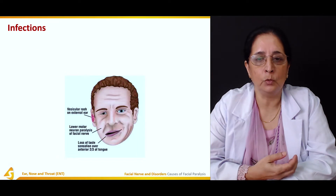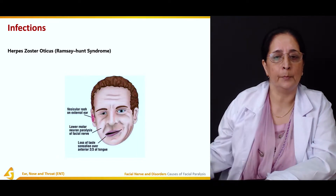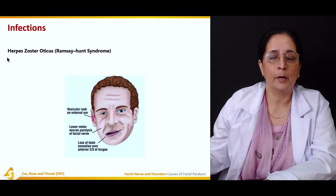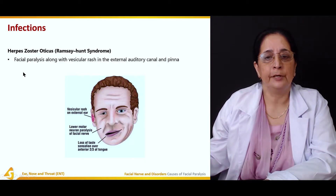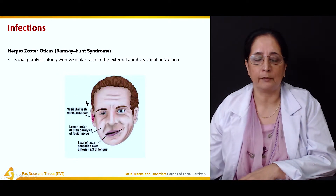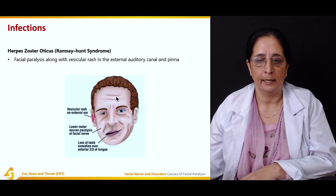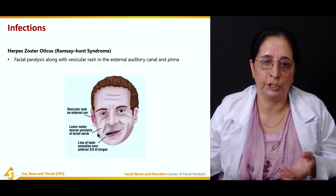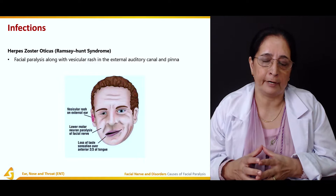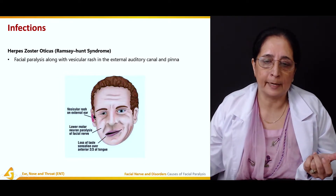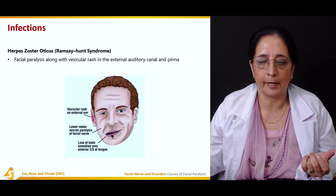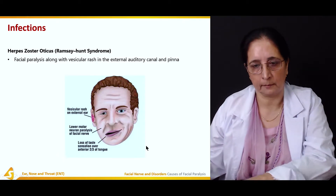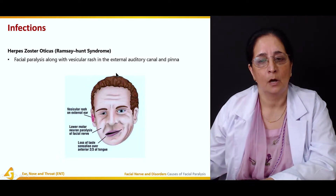Infections that can lead to facial paralysis: herpes zoster oticus is also known as Ramsay-Hunt syndrome. In this condition, facial paralysis is present along with a vesicular rash in the external auditory canal. It is a viral infection associated with vesicles or rash along with facial paralysis and loss of taste on the anterior two-thirds of the tongue.